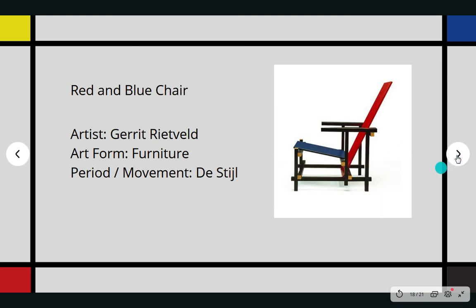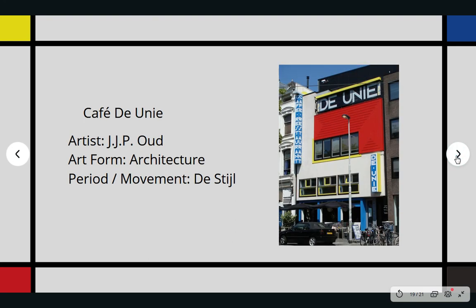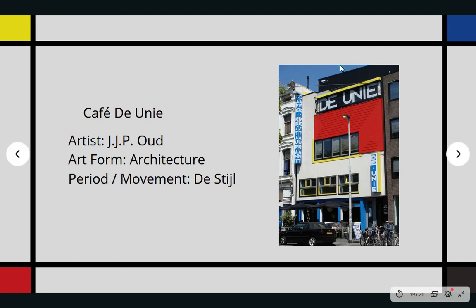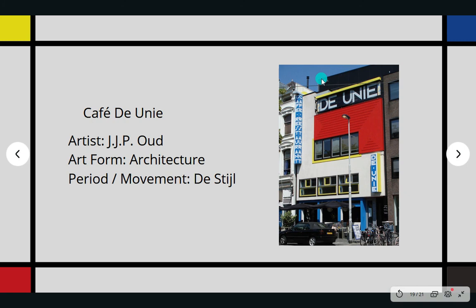And last but not least, De Stijl is also seen in architecture. Café De Unie is a building in Rotterdam designed by architect J.J.P. Oud. The original building was located on the Coolsingel and was destroyed in 1940 during World War II. In 1986, a replica of the striking facade was built on Mauritsweg, and that building was then used as a catering facility with a theater and debate center. From 2014 to 2017 it was an entertainment center, and afterwards a general catering business.